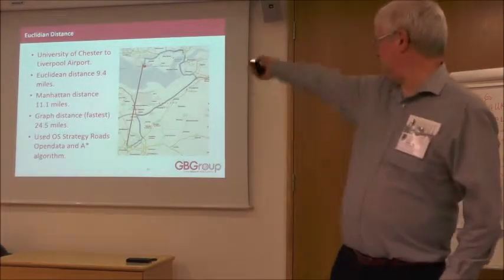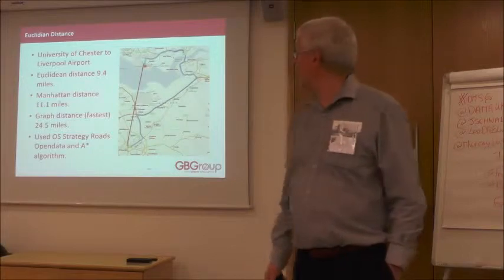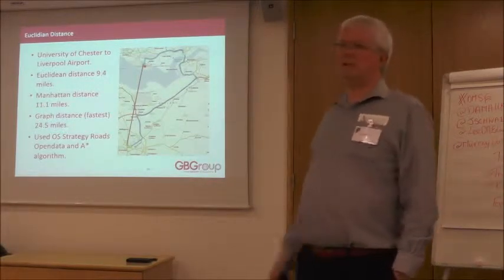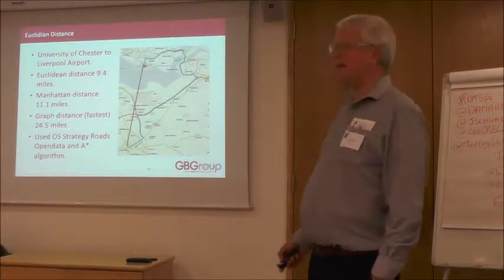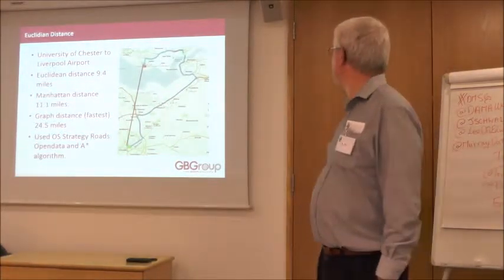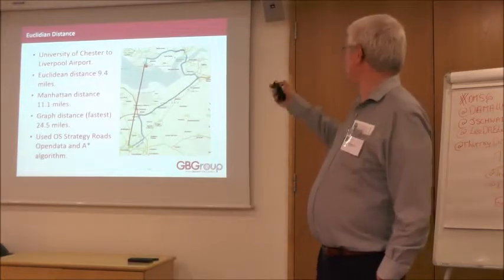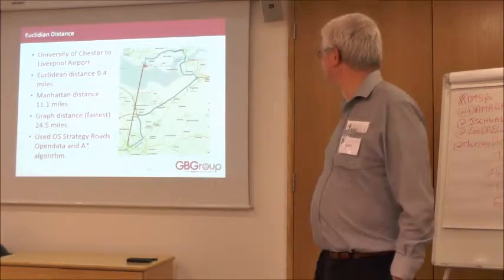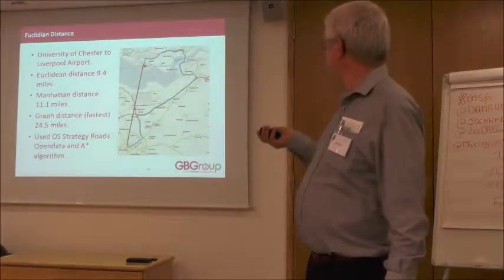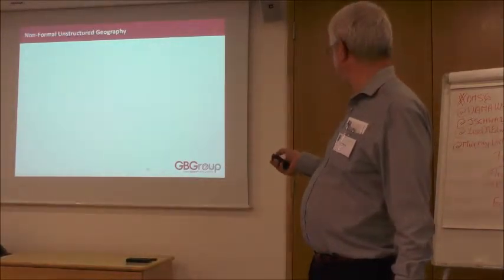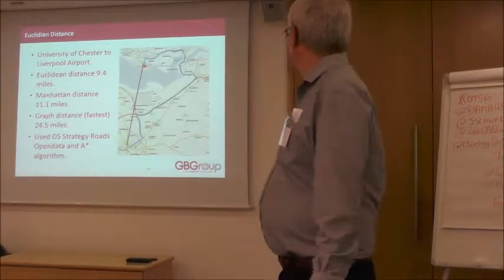The problem with Euclidean distance: Liverpool Airport put up poster campaigns around Chester saying 'Liverpool Airport — less than 10 miles from Chester,' which is correct as the crow flies. The Advertising Standards Authority came down on them like a ton of bricks saying it was misleading, because you've either got to go to the bridge or further up to the tunnel. They took them down. The graph distance — the fastest route — is basically the M56 motorway for most of the way.